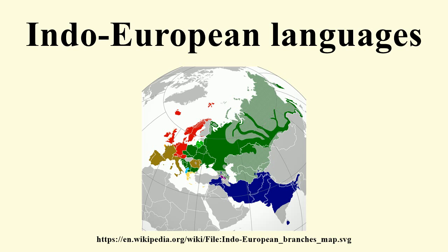The hypothesis reappeared in 1786 when Sir William Jones first lectured on the striking similarities among three of the oldest languages known in his time: Latin, Greek, and Sanskrit, to which he tentatively added Gothic, Celtic, and Persian. Though his classification contained some inaccuracies and omissions, Thomas Young first used the term Indo-European in 1813, which became the standard scientific term through the work of Franz Bopp, whose systematic comparison of these and other old languages supported the hypothesis.